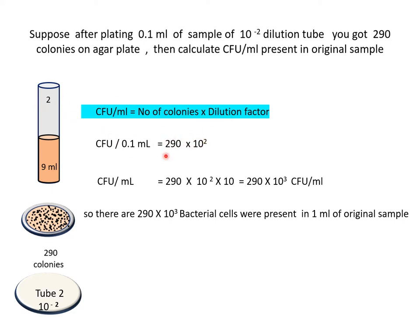So 290 into 10 power 2 colony forming units per 0.1 ml are present. Then we have to convert this CFU per 0.1 ml into CFU per ml by multiplying by 10. So it will become 290 into 10 power 3 CFU per ml.